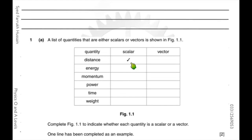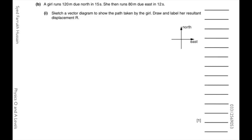You have to mark which quantity is a scalar and which is a vector. Energy is a scalar, momentum is a vector, power is a scalar, time is a scalar, and weight is a vector. Vectors are physical quantities that have both magnitude and direction, while scalars have only magnitude.